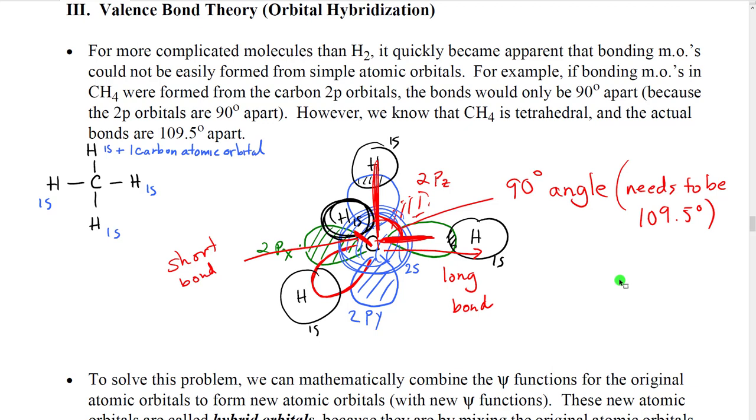The problem with this is that we already know this is wrong. They already have experiments that show that, first of all, CH4 is tetrahedral, so the bond angles need to be 109.5 degrees, not 90. Second, we know that there isn't long and short bonds. All the bonds are the same length. So this is just wrong. And, you know, if they had just stopped there, we wouldn't have a theory. We wouldn't be able to calculate bonding.